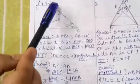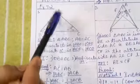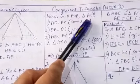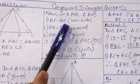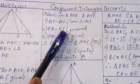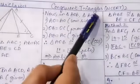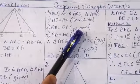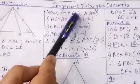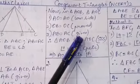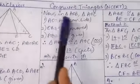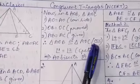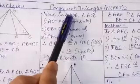Let's take up the two triangles AOB and AOC. In these two triangles, AO is the common side. OB equals OC, which we just proved. And AB equals AC, which is given. So we have three pairs of equal sides, and by the SSS congruence criterion, triangle AOB is congruent to triangle AOC.